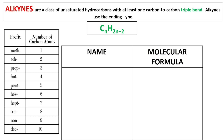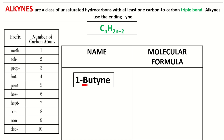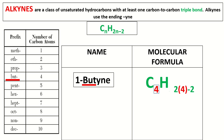For example, we have 1-butyne. The number 1 indicates the location of the triple bond, and the prefix 'but' means 4 carbon atoms. Using the general formula of alkynes, we substitute n = 4. For the hydrogen atoms, we multiply 2 times 4, giving us 8, then 8 minus 2 equals 6.